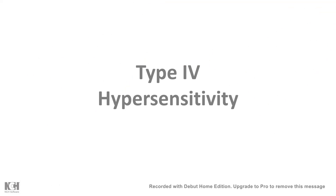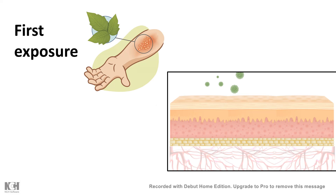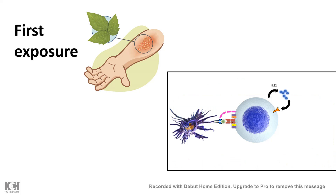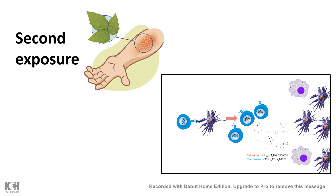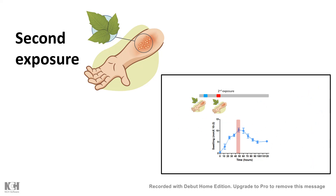Type 4 is a delayed hypersensitivity. Say a person is exposed to poison ivy or poison oak, which contains a compound called urushiol. This urushiol enters the skin and is detected by resident macrophages, which activate T cells that differentiate into inflammatory Th1 cells. On second exposure, the response is amplified — T cells are activated faster and secrete inflammatory cytokines and chemokines, attracting more immune cells to the site of exposure, leading to an elevated response and the consequences of type 4 hypersensitivity.